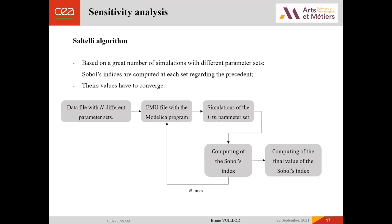Numerically, to compute the Sobol's indices, we use the Saltelli algorithm. It's based on a great number of simulations with different parameter sets because the Sobol's indices are computed at each simulation regarding the precedent. And to be correct, the Sobol's indices have to converge in function of the number of simulations. So we have to do a lot of simulations and to do that, we use the FMU file exportation option of Modelica to have a light program run a lot of time by Python code.